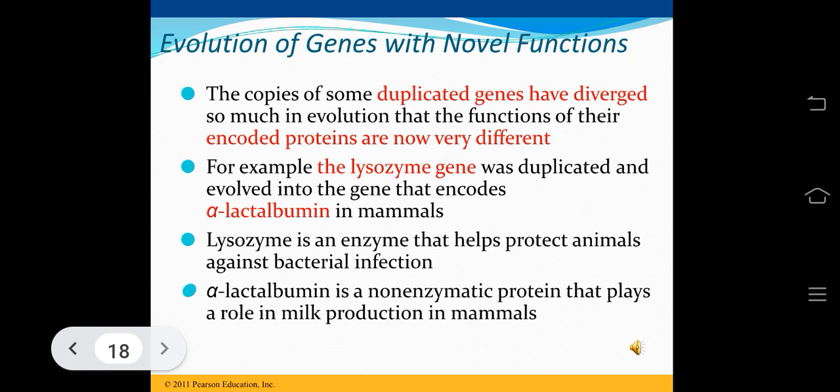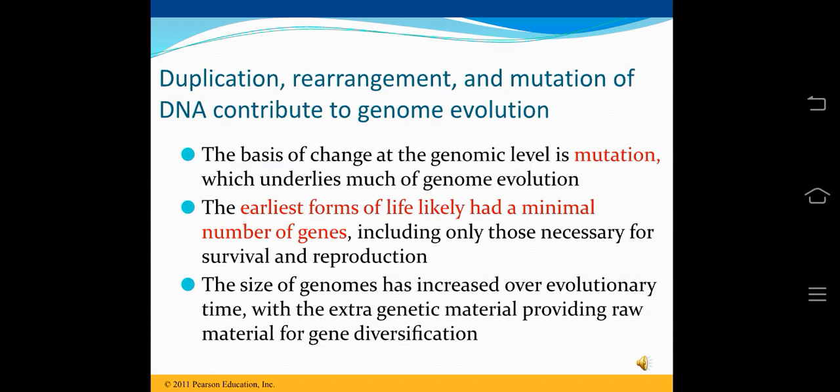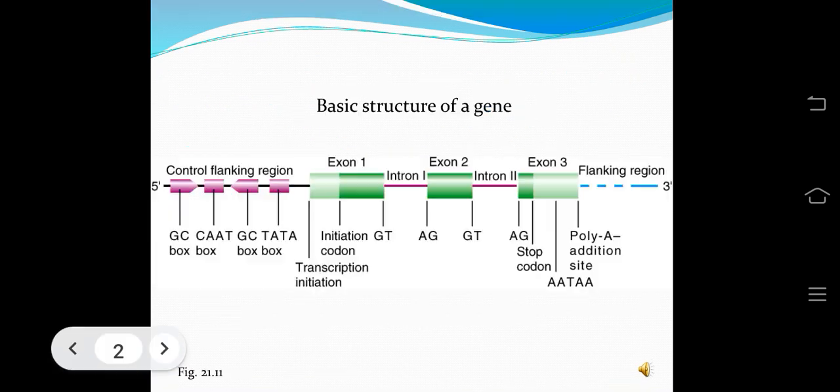Much of genome evolution is driven by mutation. The earliest forms of life likely had a minimum number of genes — only those necessary for survival and reproduction. The basic structure of a gene includes a control flanking region, exons, introns, and a flanking region, with a transcription initiation site, initiation codon, stop codon, and polyadenylation addition site.